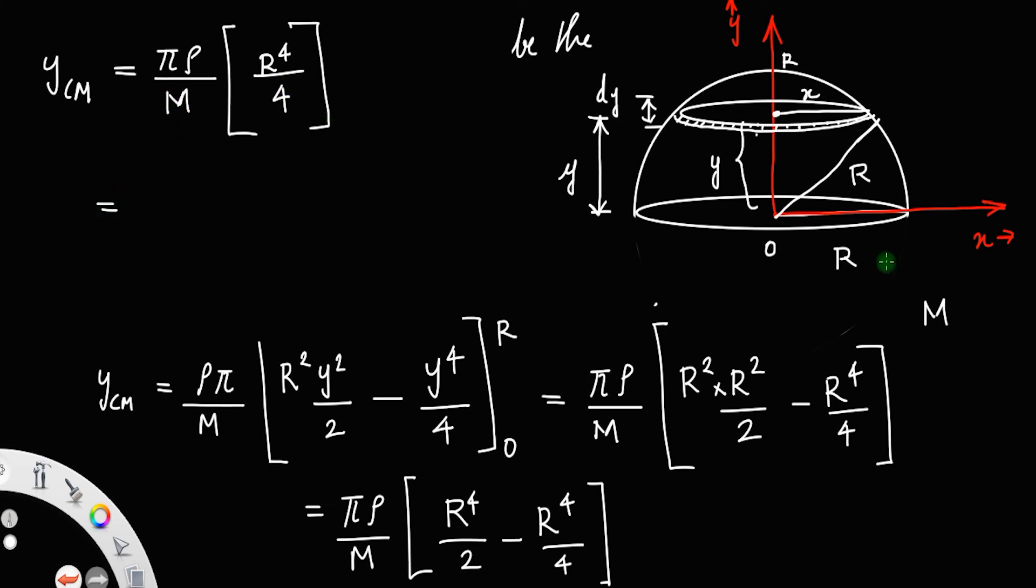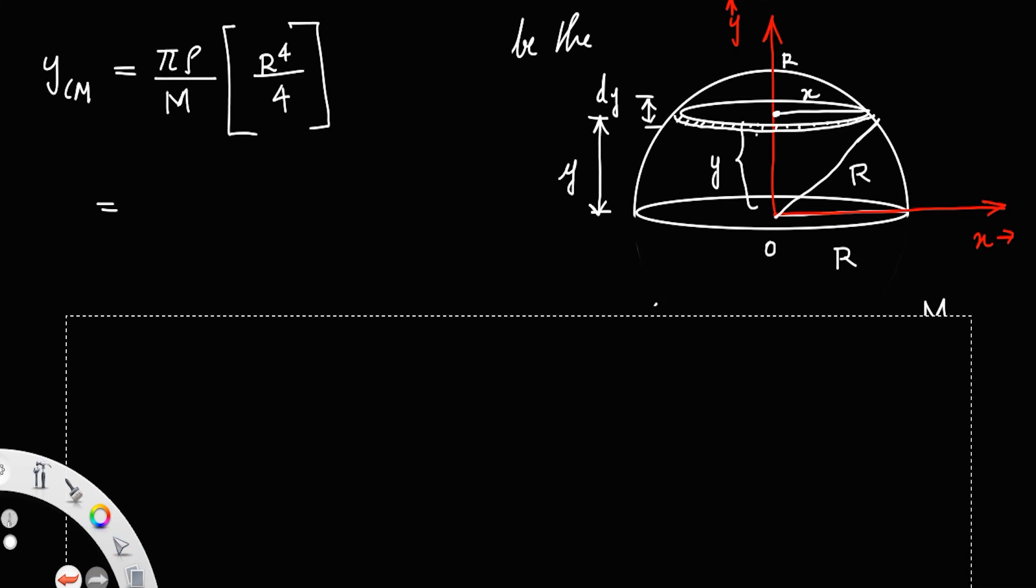Instead of M you can write the mass of the hemisphere, that is volume into density. The volume of the hemisphere is 2 by 3 pi r cubed into density rho into r raised to 4 divided by 4.